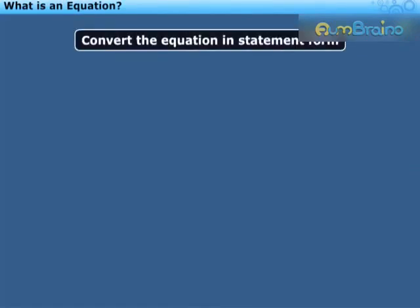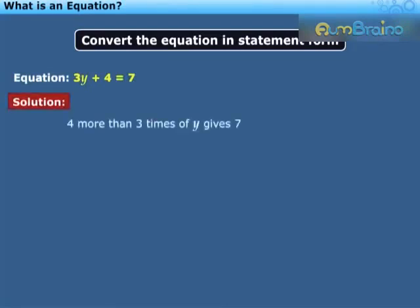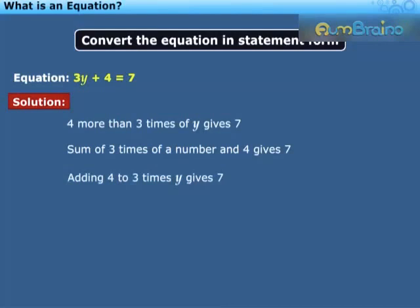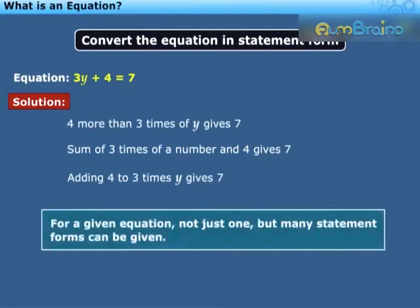So far we have been forming equations from statements. Now we will convert equations to statement forms. The equation is 3y plus 4 is equal to 7. We can express it as: 4 more than 3 times of y gives 7. It can also be stated as: sum of 3 times of a number and 4 gives 7. Further, we can write: adding 4 to 3 times y gives 7. Hence it may be noted that for a given equation, not just one but many statement forms can be given.